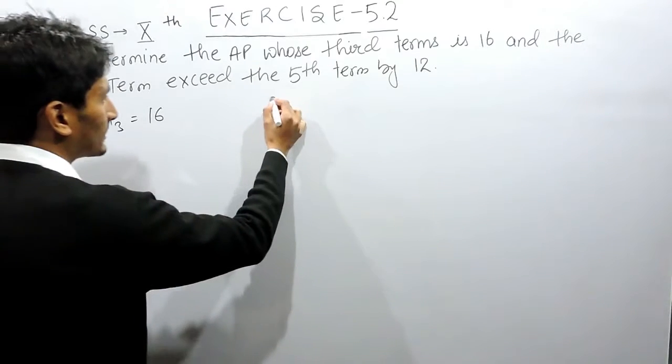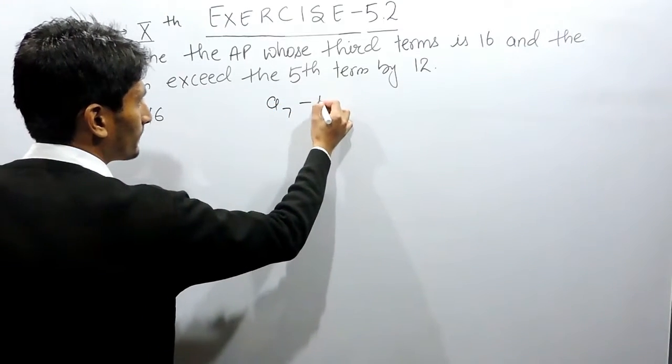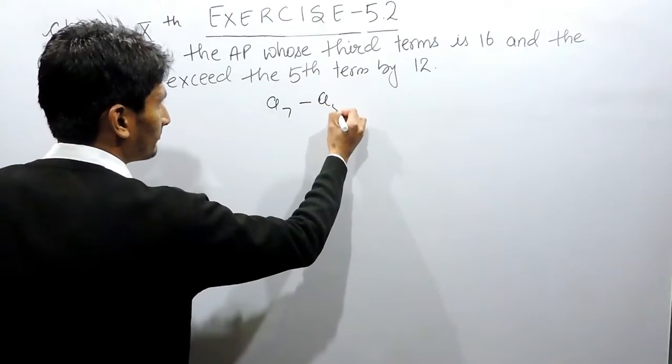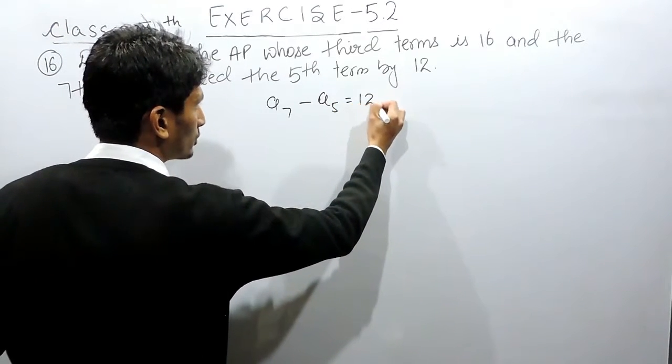Obviously the seventh term is greater, so seventh term minus fifth term should be equal to 12.